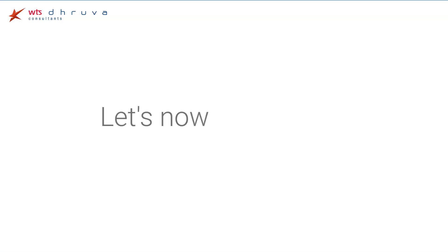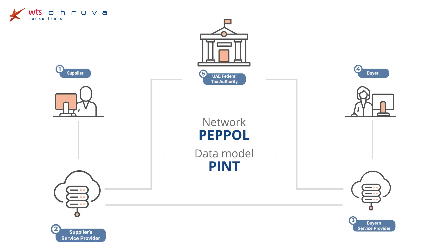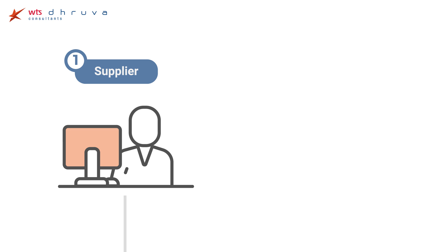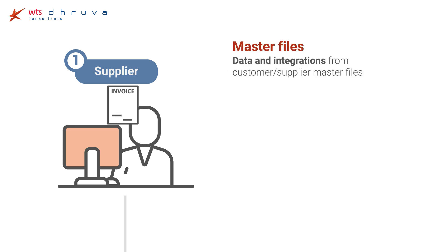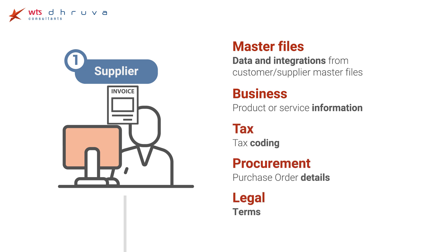Let's now understand how this works in more detail. Our journey begins with the supplier, who initiates the e-invoicing process through their usual business software. An invoice will incorporate data from various sources, including master files, business data, tax data, procurement data, and legal data.